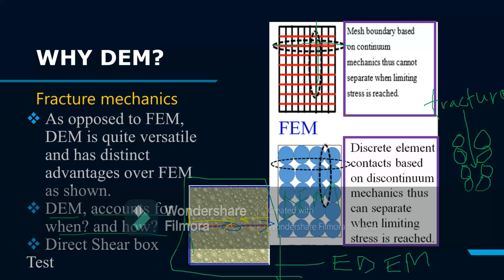For example, with a direct shear box: if this is the shear box sample, you have a plate there and a plate there, a constant load P, and the plates are moving in the direction shown — so we will have a shear zone.